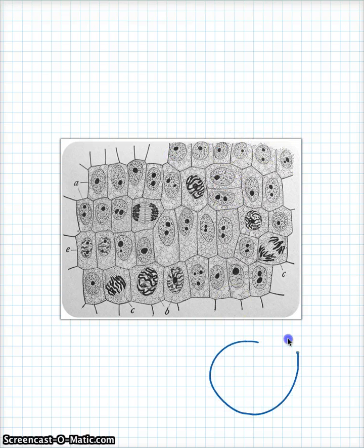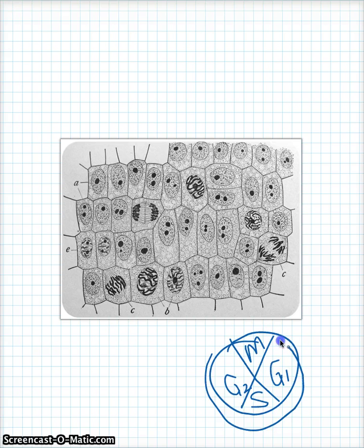Remember that interphase is all of the cell cycle, G1, S, G2. All of this is all interphase except for mitosis, so interphase. So, cells are in interphase a lot more of the time. That's why there are so many of them in interphase.